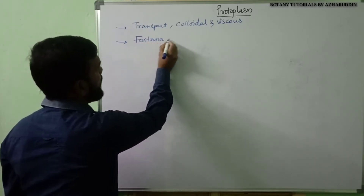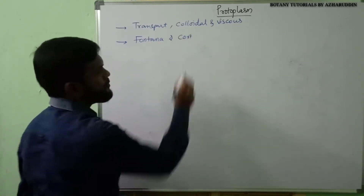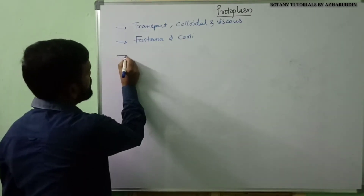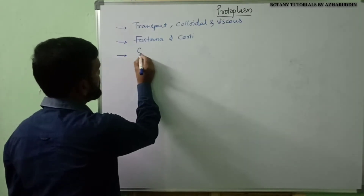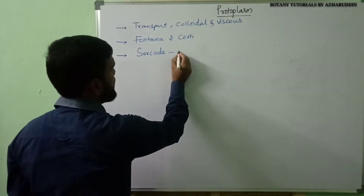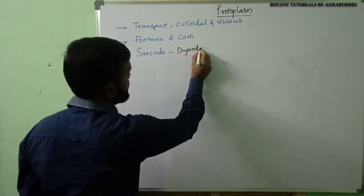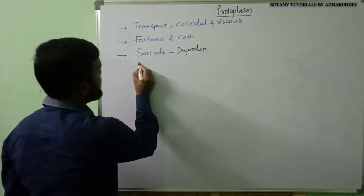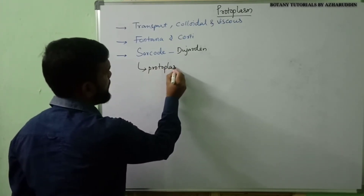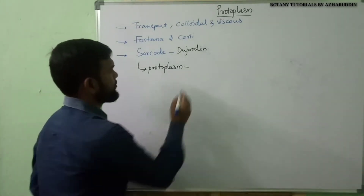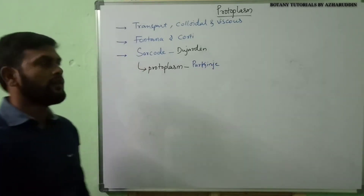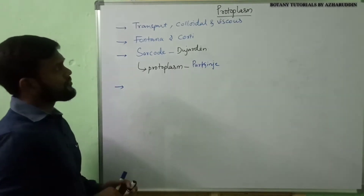Protoplasm was first observed by Fontana and Korthy in the plant cell. Later this protoplasm was named as Sarco by Dujardin. After that, Sarco was renamed as protoplasm by Purkinje.